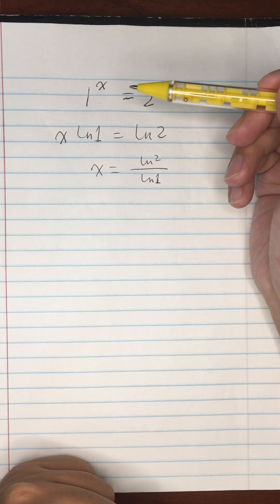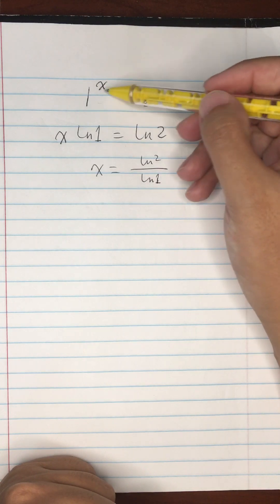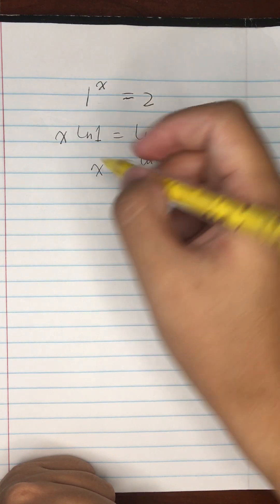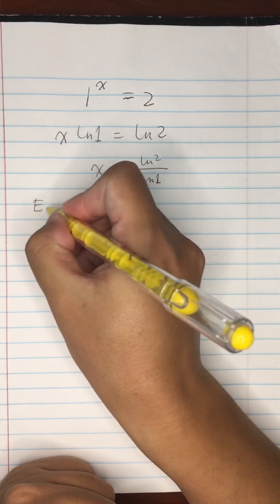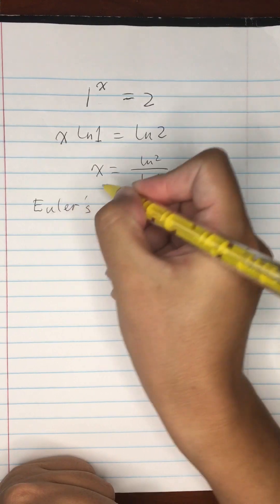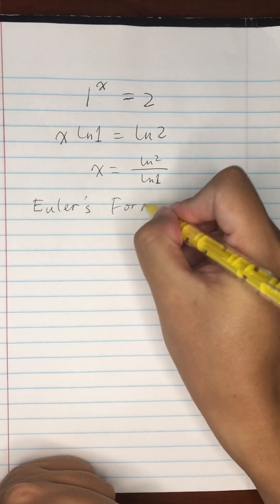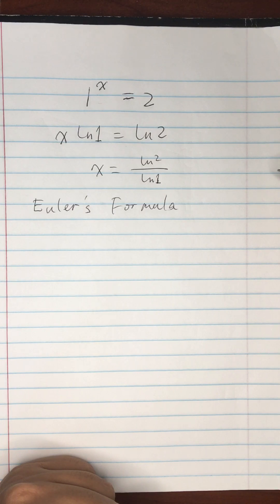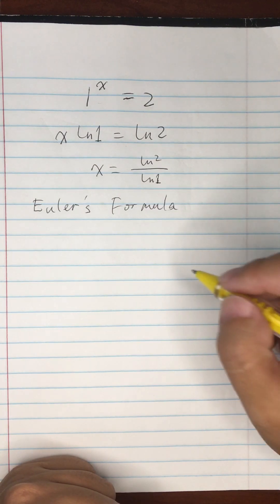But if we extend our domain to complex numbers, then we can actually find a solution. Here we have to use Euler's formula. It's a complex number formula called the most beautiful formula in mathematics because it combines lots of different things together in just one simple equation.